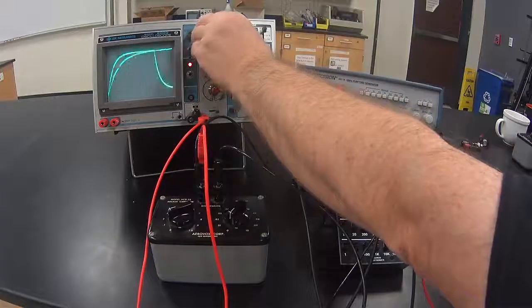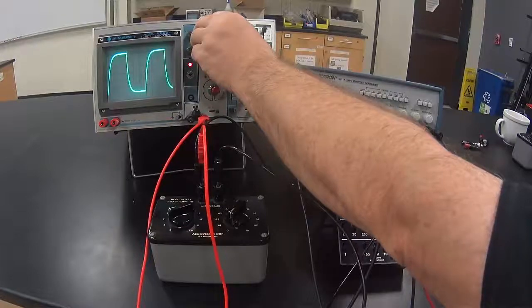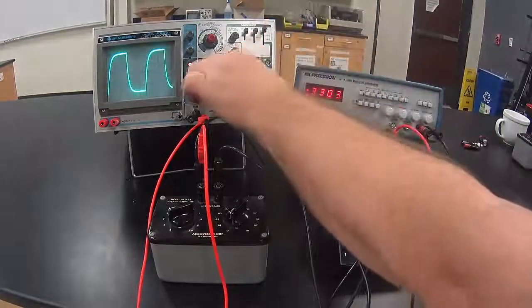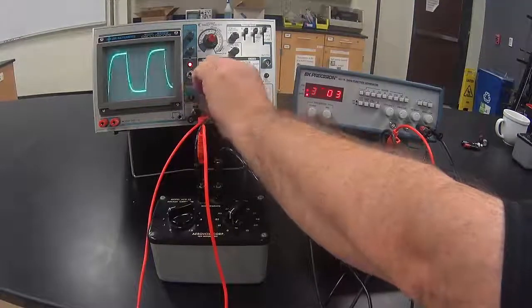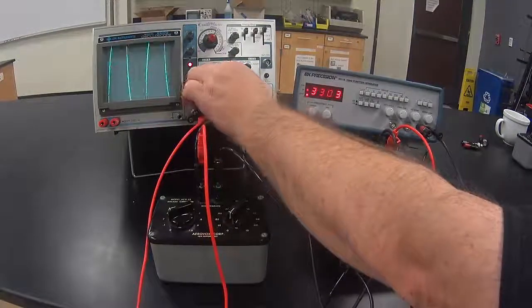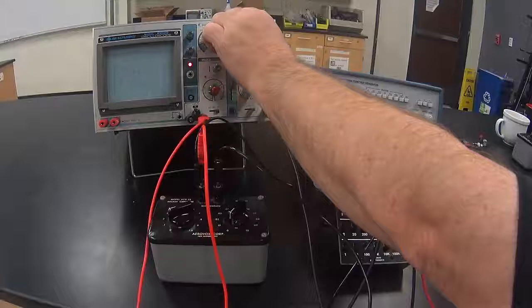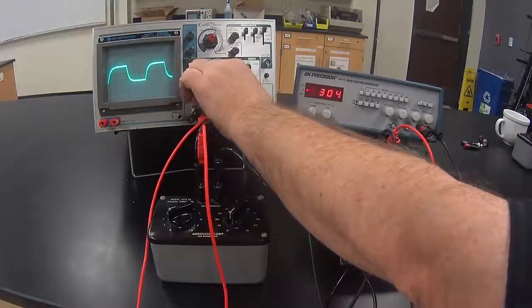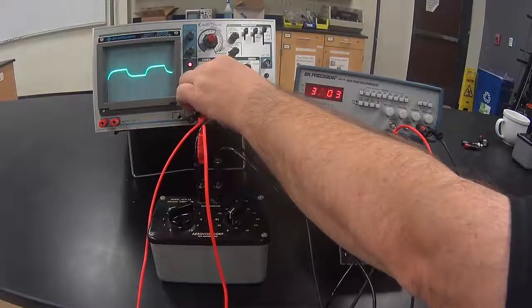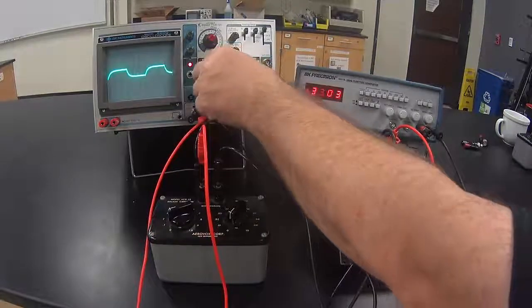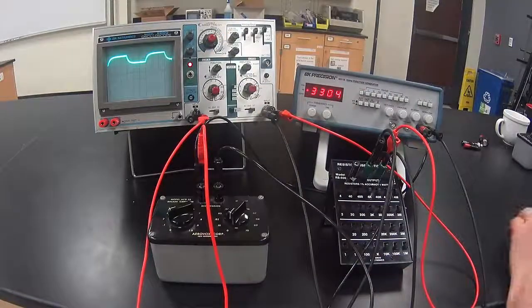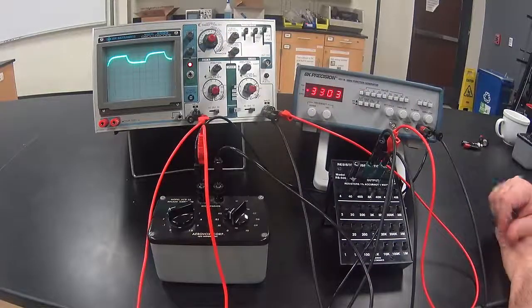Adjust the time sweep and the function generator so that you can display several periods at once. Adjust the volts per division on channel A. You may have to adjust the trigger as well so that it only takes up about half the screen vertically. And then use the vertical adjust knob to move the signal to the top half of the screen.